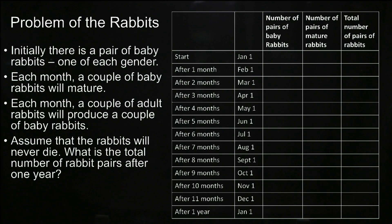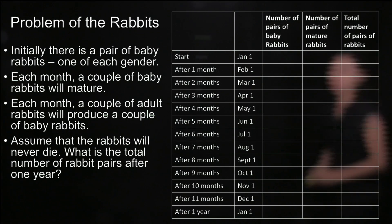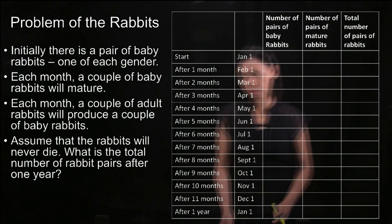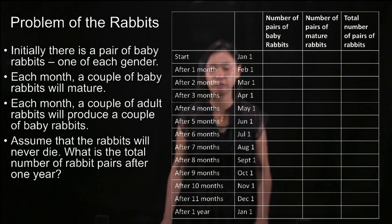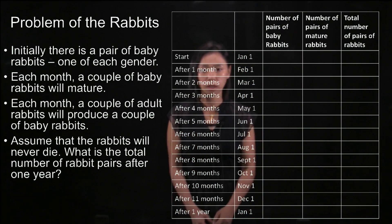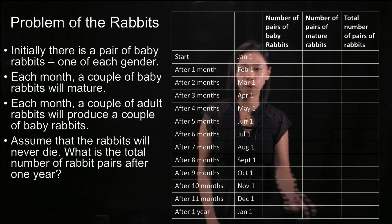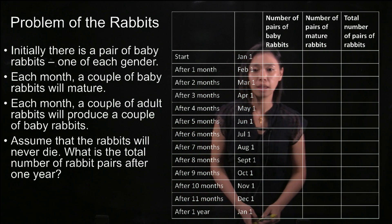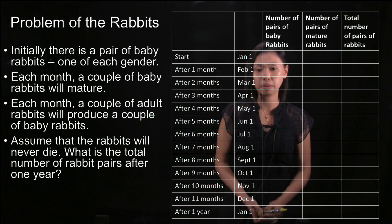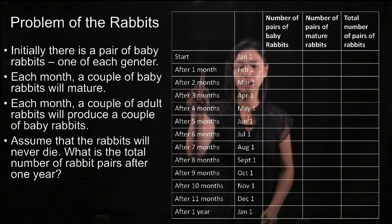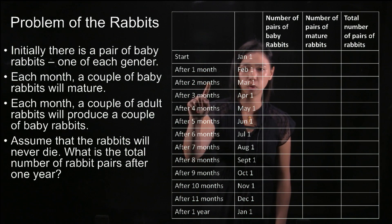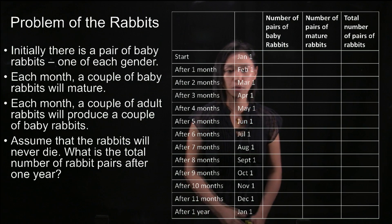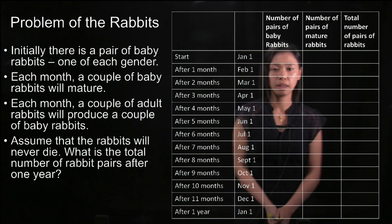We will introduce difference equations by the problem of rabbits, which was developed in the 13th century by Fibonacci. Here we have a table recording the number of rabbits from the start, after one month, after two months, and so on, until after one year.